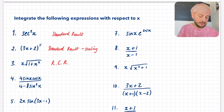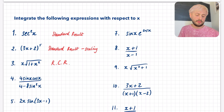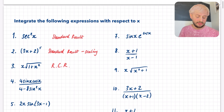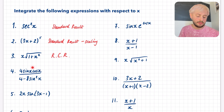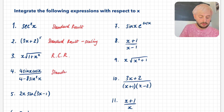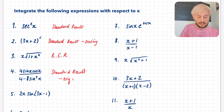Question 4 doesn't really look like a standard result at first, but I mentioned that you should try manipulating it to make it into a standard result. Thinking about trig identities, you'll notice the numerator looks familiar and the denominator looks familiar. So this one is actually going to be a standard result, but before we get there, there's going to need to be some manipulation using a trig identity.